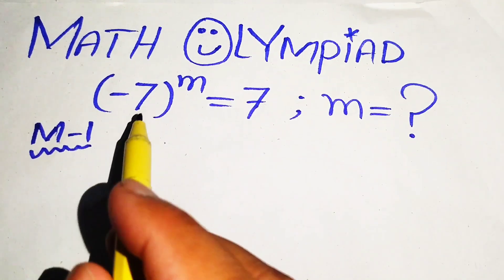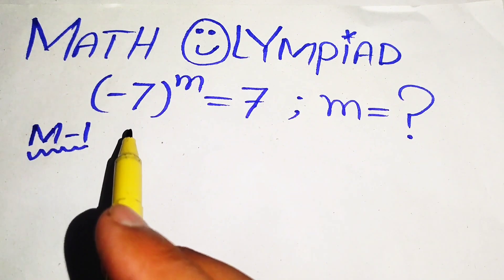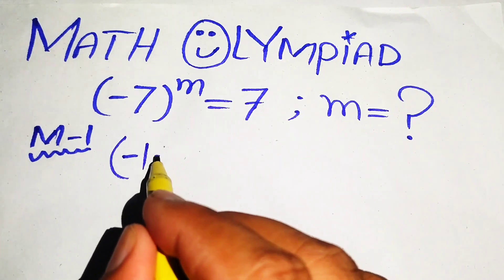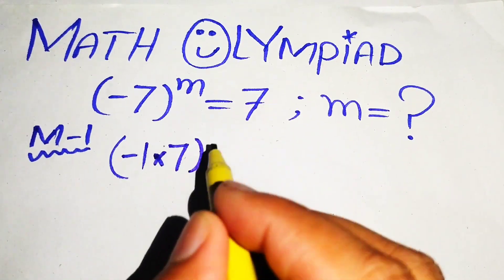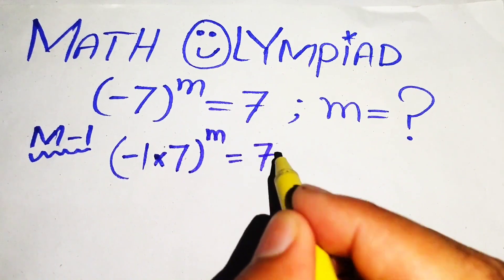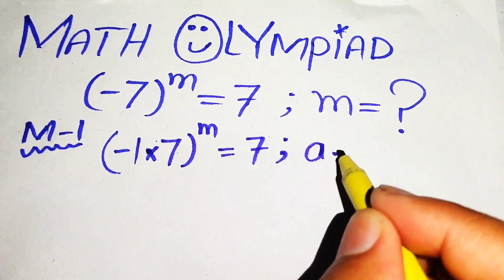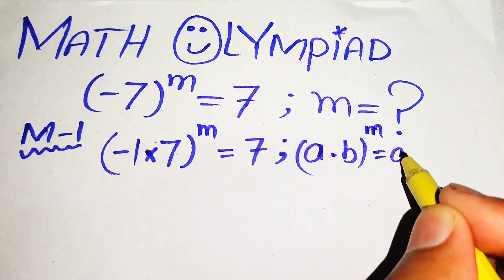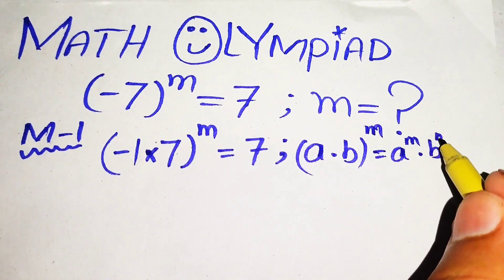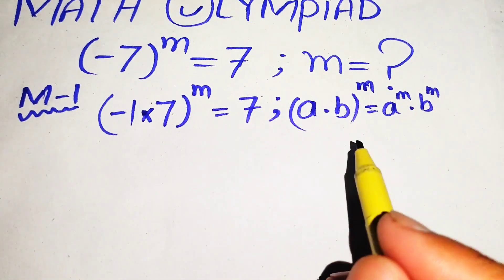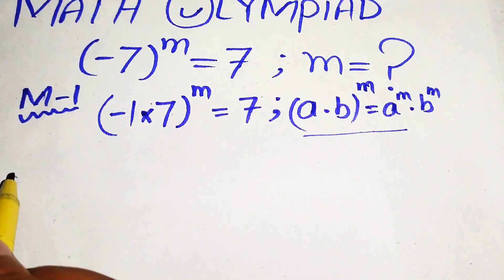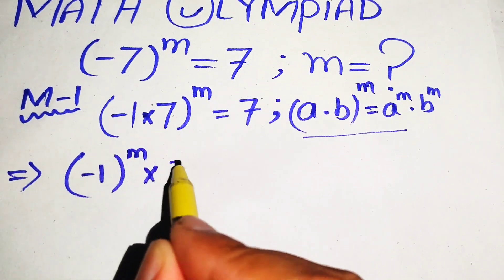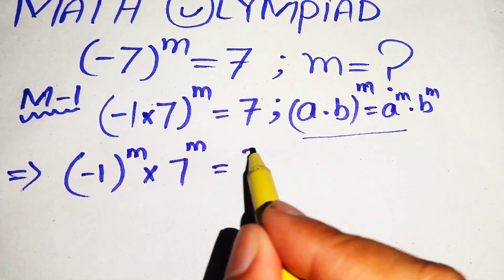In method one, we first use the exponential law and separate the two values. We rewrite this equation as minus 1 multiplied by 7, and its whole power m equals to 7. Then we apply the exponential law: if we have (a multiplied by b) to the power m, it equals a to the power m multiplied by b to the power m. We apply this to the left hand side and write it as minus 1 to the power of m multiplied by 7 to the power of m equals to 7.